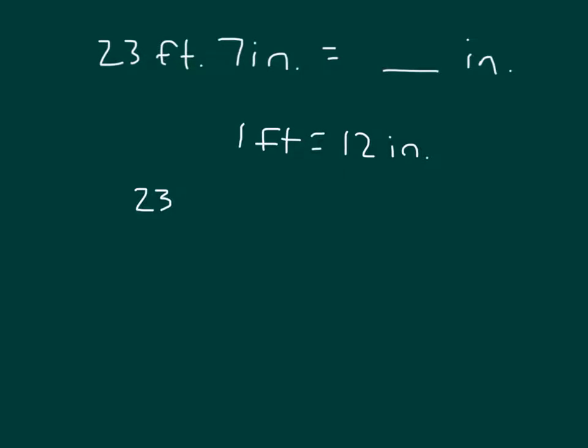In this case, 12 inches. 23 times 12. 2 times 3 is 6. 2 times 2 is 4. Place a 0. 1 times 3 is 3. And 1 times 2 is 2. We add those together to get 276. So this 23 feet is worth 276 inches.